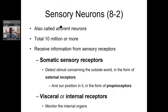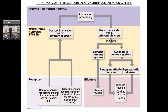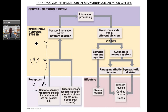The afferent neurons are the unipolar ones. They have receptors either in the somatic division — meaning the outside, the skin, and muscles — or the visceral division, which is your internal organs. Both are sensory. So going back to the chart, these would be unipolar neurons. There would be a cell body, a dendrite, an axon, and an axon terminal.